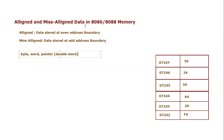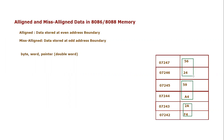Let's look at a chunk of memory and consider some examples with words. We have three words: 2AF4, 59A4, and 5624. To determine if these words are aligned or not, we check whether they are stored at an even address. The first word, 2AF4, is stored at address 07242.